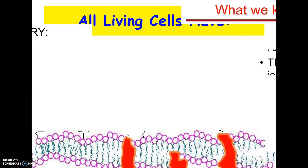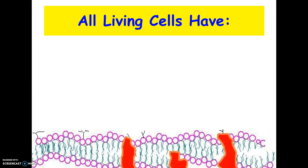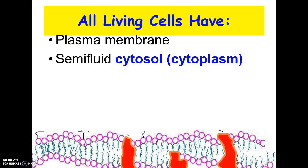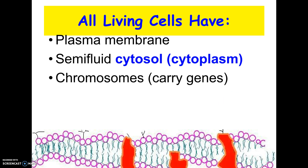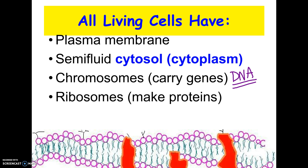The next thing you should know is that there are some features that all cells have — at some point in their lifespan, because technically some cells don't have these parts all the time. Number one: plasma membrane, or cell membrane. Number two: the cytoplasm, which you may also see called cytosol — it's the same thing. Third: chromosomes, or DNA, or nuclear material — some kind of genetic material. And finally: ribosomes. Ribosomes are the part of the cell that manufactures proteins. Since cells are mostly made out of protein and their products are mostly proteins, it is important for all living cells to have ribosomes.